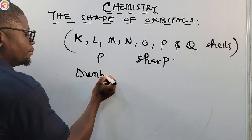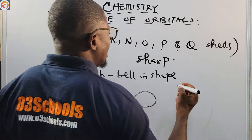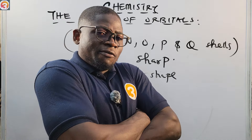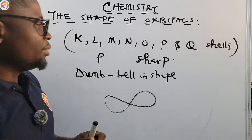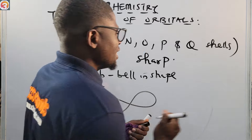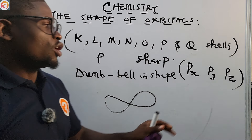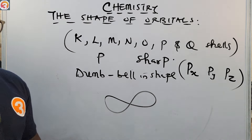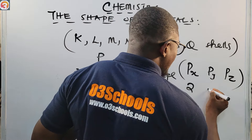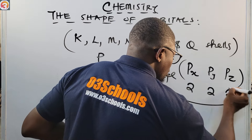Now let's talk about the P orbital. The P orbital is dumbbell in shape — like an hourglass, or like folding your arms. There are three types of P orbitals, also called degenerate orbitals or sub-orbitals: Px, Py, and Pz. Each of these sub-orbitals can accommodate two electrons each.